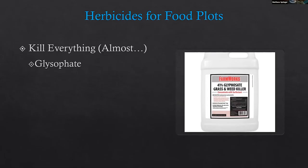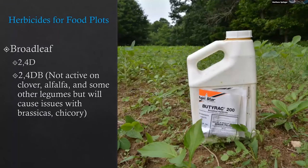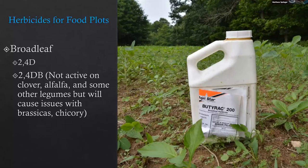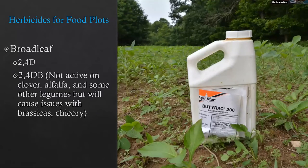We can get into more specific herbicides that act on certain types of plants. For broadleaf weeds, you have a couple of options. The standard broadleaf treatment is 2,4-D. You also have 2,4-D-B, which is a little more specific in how it acts and gives you some leeway — it won't impact your clover, alfalfa, or legumes that you have planted. However, it will definitely impact any brassicas or chicory in the plot, so be aware of it as a potential tool.